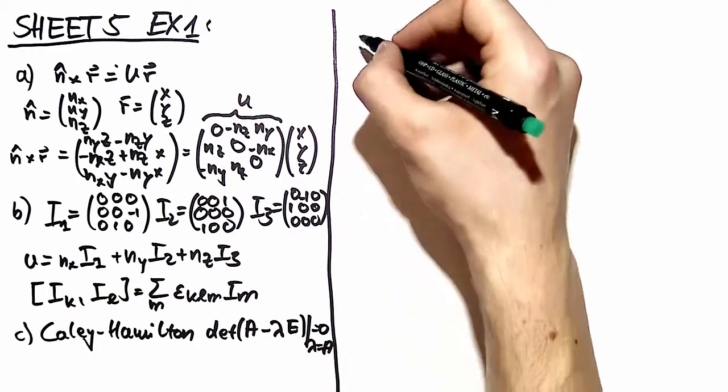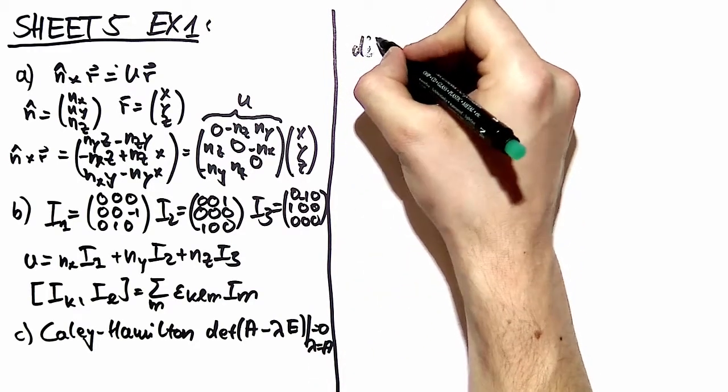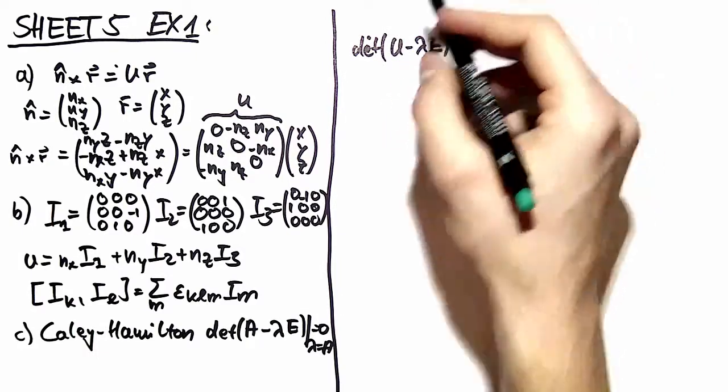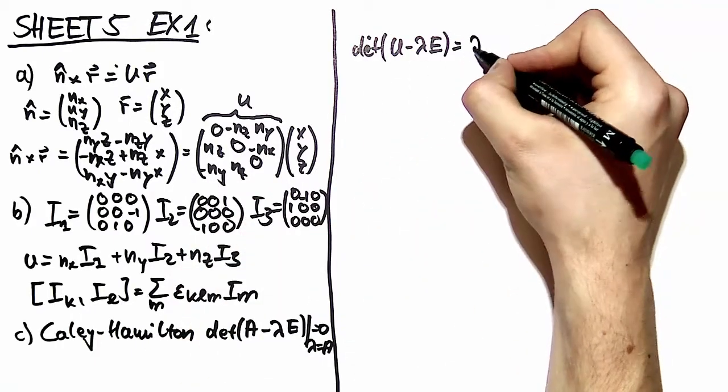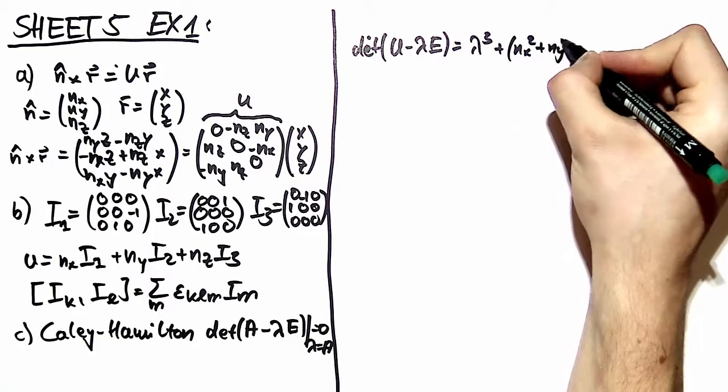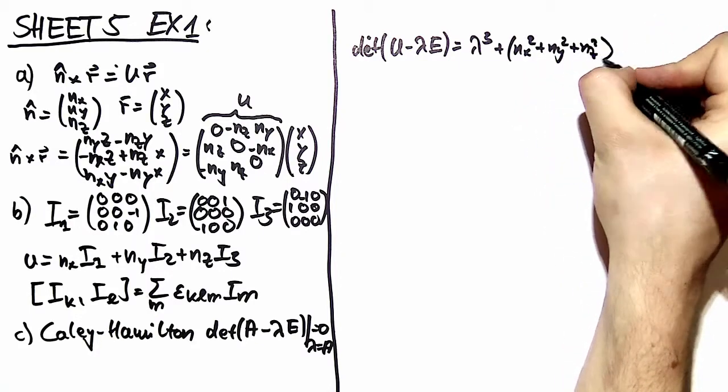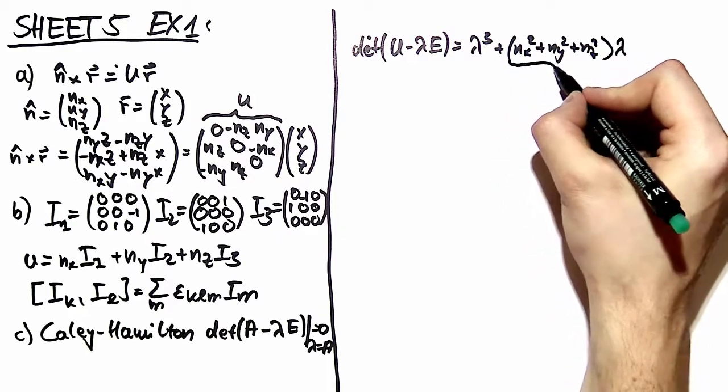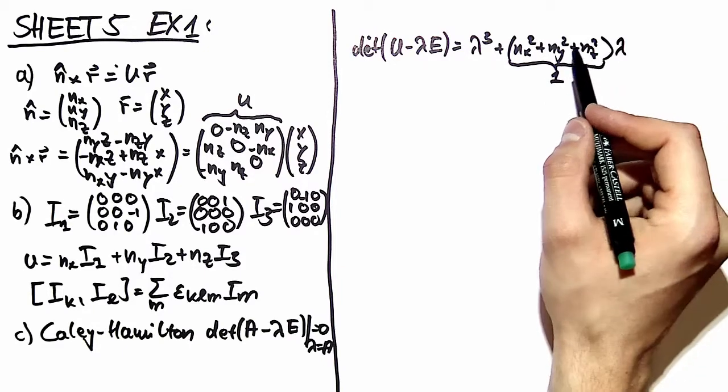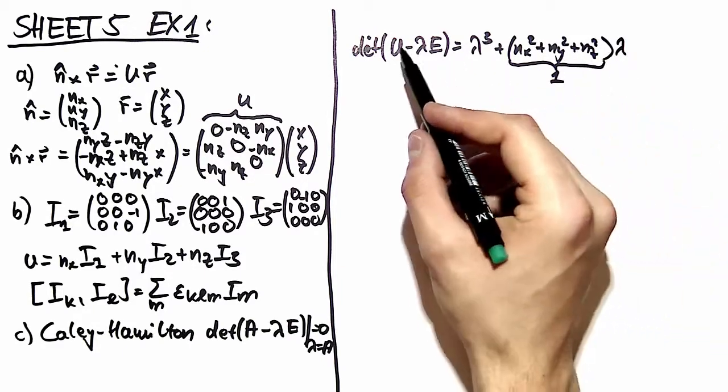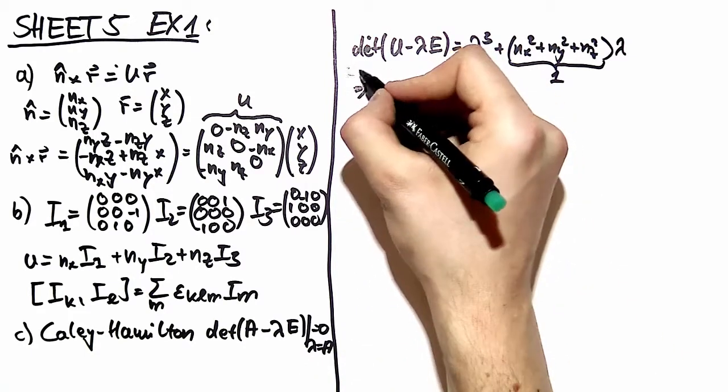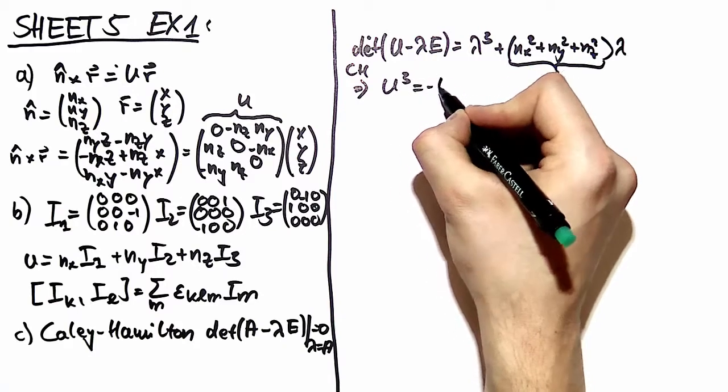So how do you apply that to your matrix U? Well, all you do is you compute the characteristic polynomial. And when you insert that into your matrix over here, what you get is lambda to the third plus n_x squared plus n_y squared plus n_z squared times lambda. And we said that n is a unit vector. So this is equal to one. And now you set lambda being equal to u. And all this is then equal to zero. And that gives you by Cayley-Hamilton that u to the third is equal to minus u.